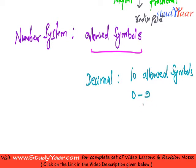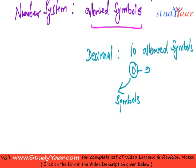0, 1, 2, 3, 4, 5, 6, 7, 8, 9. These are symbols which we use to form a number.